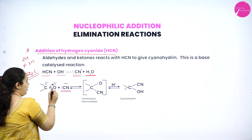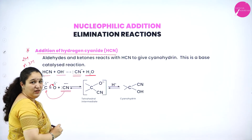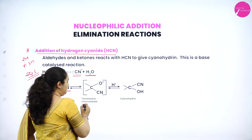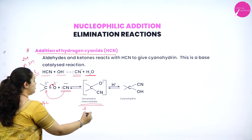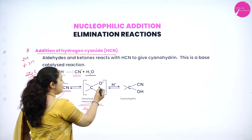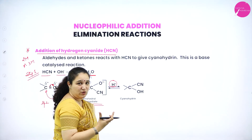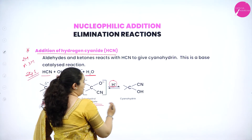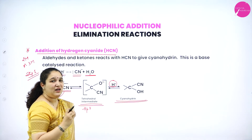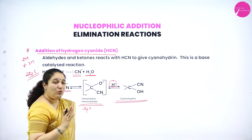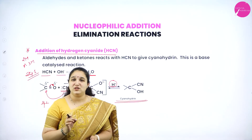In step two, the cyanide ion (CN⁻) attacks the carbonyl carbon. Oxygen pulls the pi electrons toward itself, getting a negative charge, while the cyanide ion bonds to the carbonyl carbon, changing the structure from sp2 to sp3 — a tetrahedral intermediate. Oxygen still carries the negative charge and then picks up a proton (H+) from water to give the cyanohydrin product. Thus HCN is added to the aldehyde or ketone.